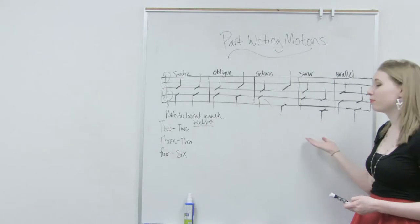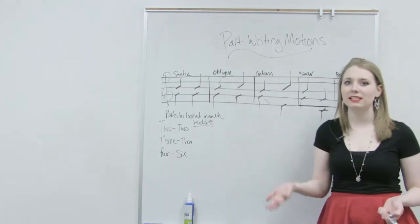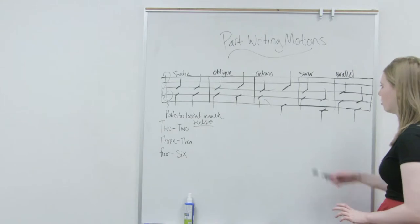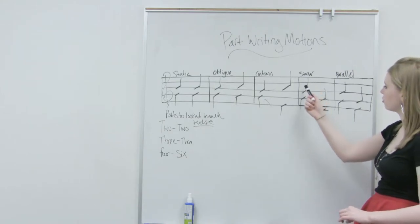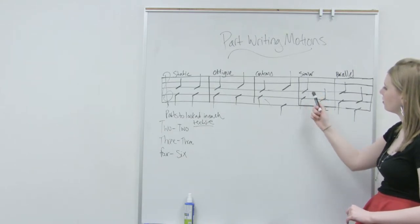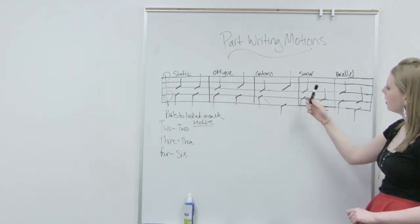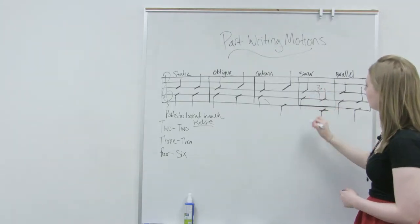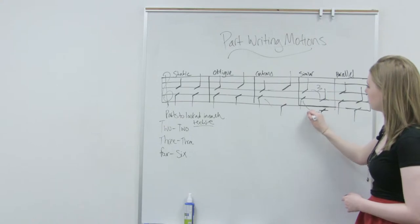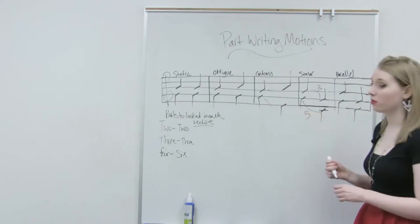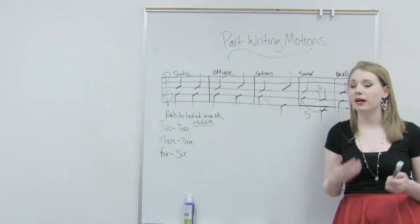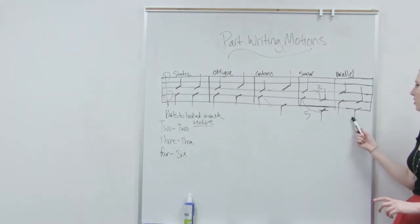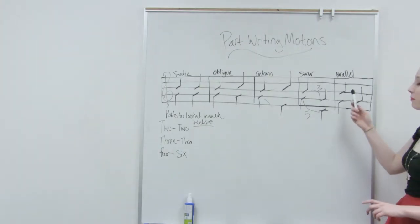Similar motion means that both parts move in the same direction but not the same intervals. Here we have G and B, and the B moves down to the G which is a third, and then the G moves down to a C which is a fifth — both moving in the same direction but different intervals.